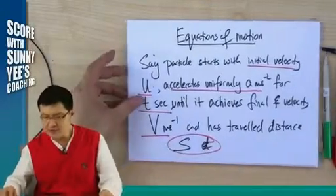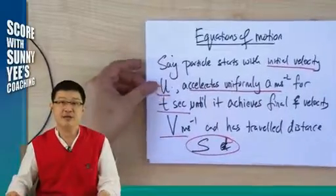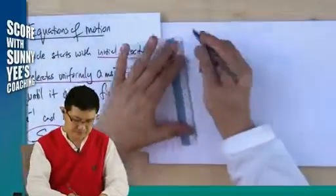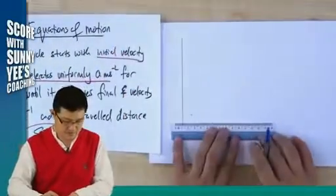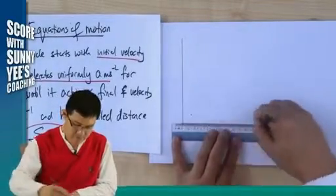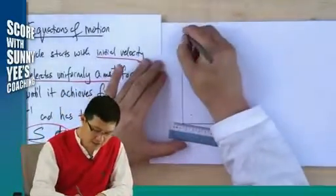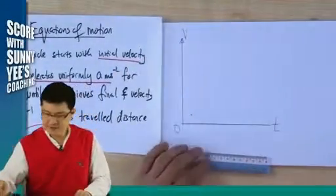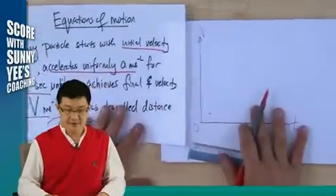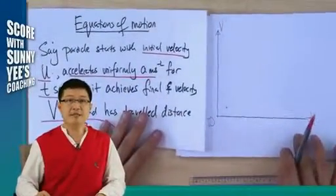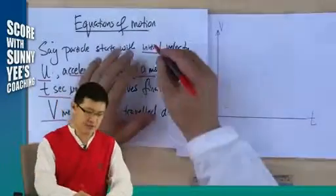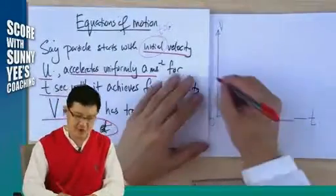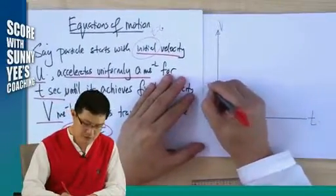I'm going to convert this into a velocity-time graph. A particle starts with initial velocity — when initial means when the time is zero — when the time is zero, it starts with U.